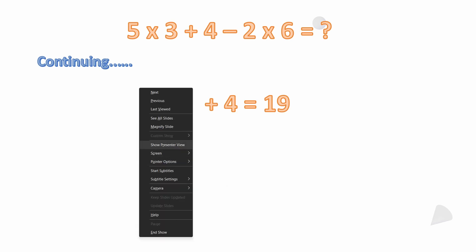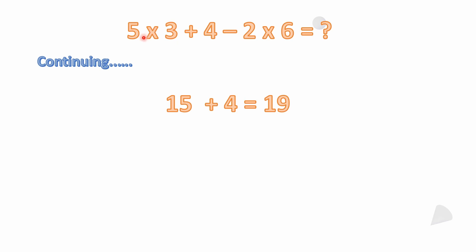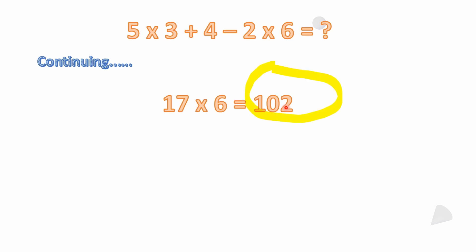So fifteen plus four equals nineteen. Notice that if you were following order of operations, you would start with the multiplication — two times six — not add the four yet. But continuing left to right: nineteen minus two equals seventeen, and then seventeen times six equals one hundred two. That's just going left to right without doing multiplication first.